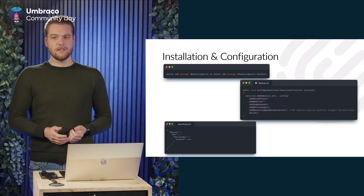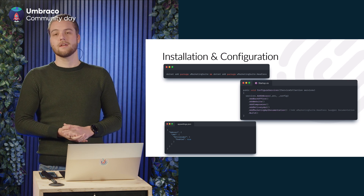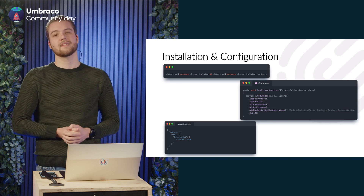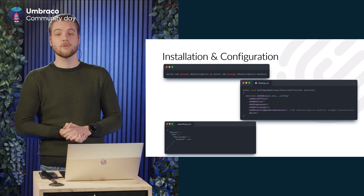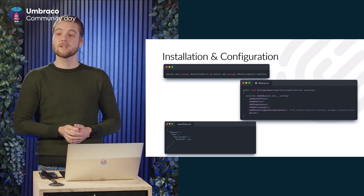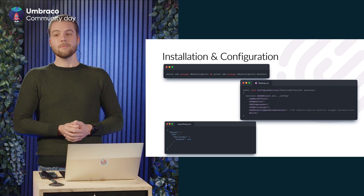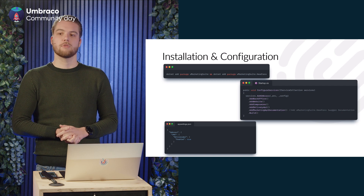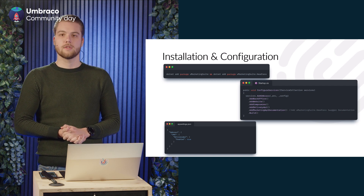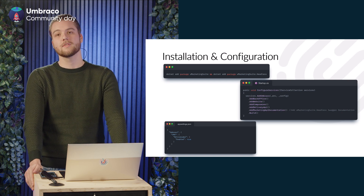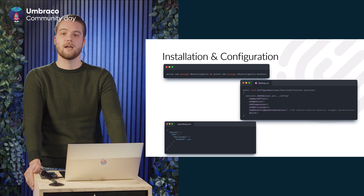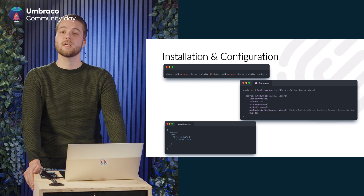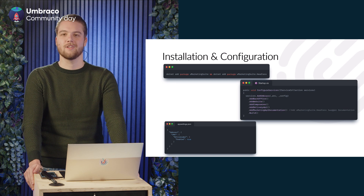Getting started with installation is surprisingly easy. First, install both Your Marketing Suite and the Marketing Suite headless package via NuGet. Next, in your startup.cs, add a single line of code after the Add Delivery API call to add the Marketing Suite documentation to the Swagger back office. Lastly, make sure the Delivery API from Umbraco is enabled, otherwise you can't use all the features.